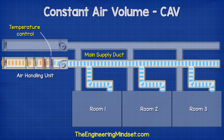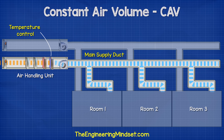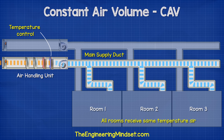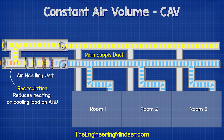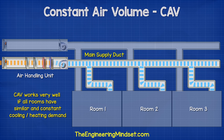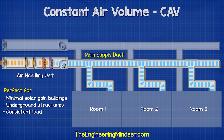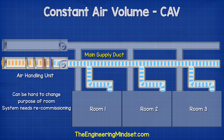From this schematic representation of the CAV system you can see how it's all connected. Notice that all of the rooms are connected to this main duct and the only form of temperature control is in the main AHU, meaning all rooms receive the same temperature air at a constant volume. Some AHUs have the ability to recirculate a portion of the air back into the supply stream to save energy, but this is not always used or permitted by local regulations. The CAV design would work very well if all of the rooms had a similar cooling demand — for example, if the building was underground or had minimal solar heat gains and each room had a consistent heat load that didn't vary too much.